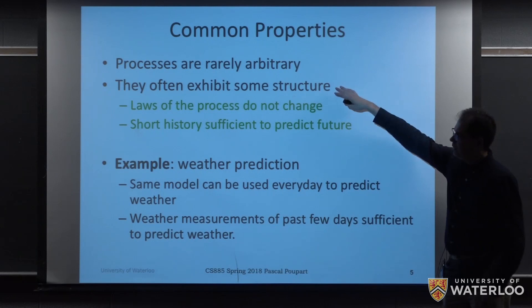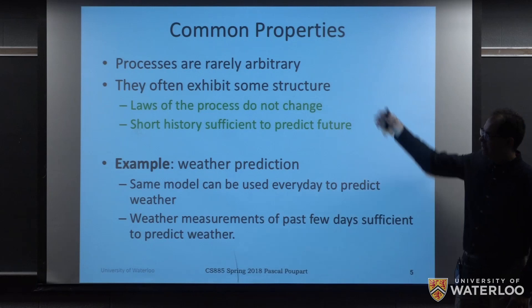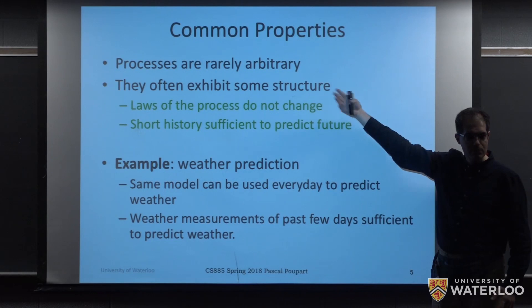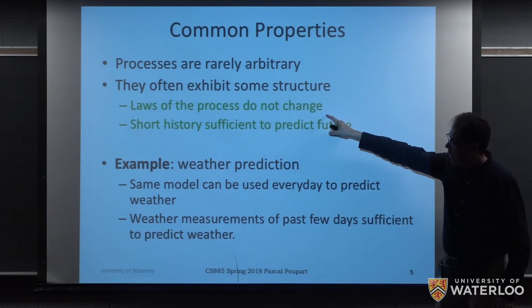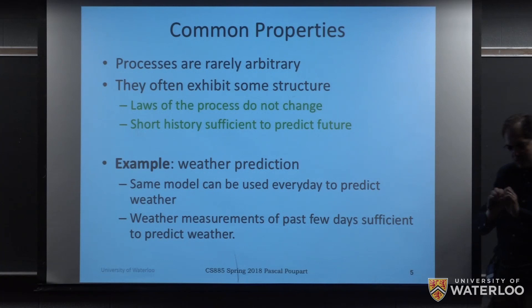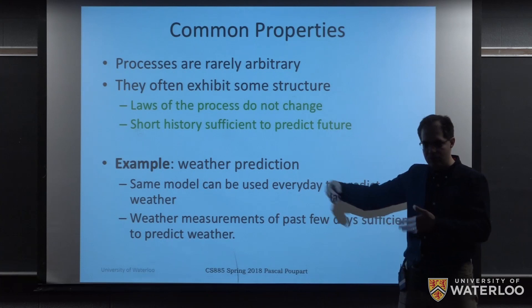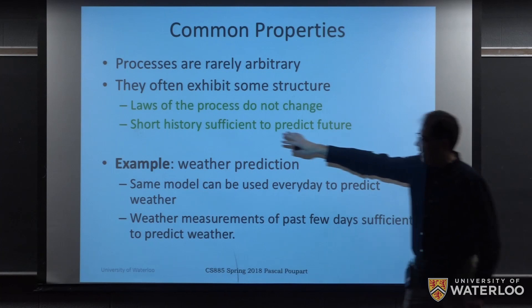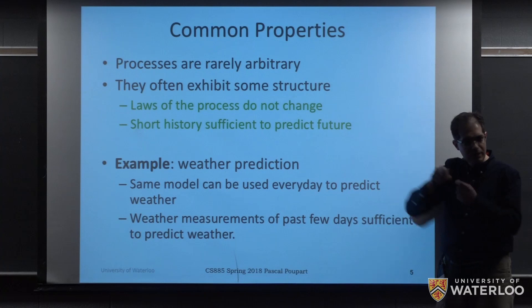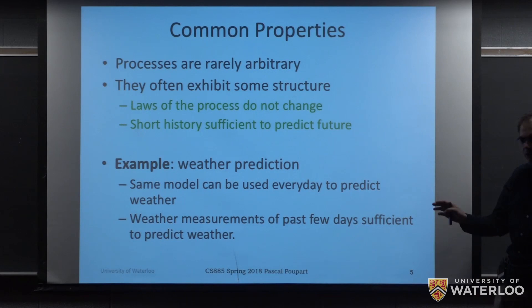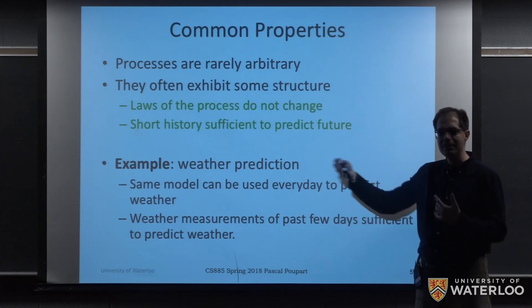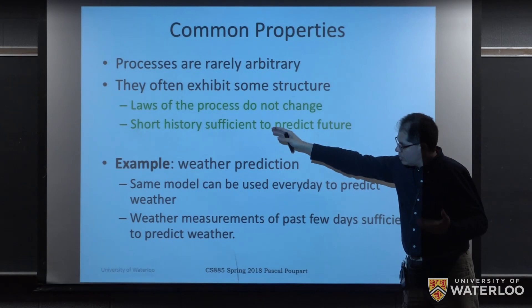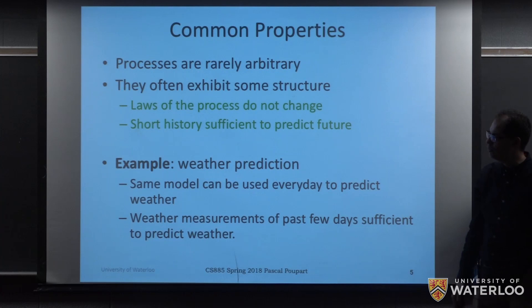There are lots of processes that we could use to model this. What tends to happen in practice is that most processes have some structure — they're not completely arbitrary. What I mean by this is that the laws of the process often do not change over time. The process is essentially the dynamics of how states, actions, and rewards would evolve. In many situations, the laws of the process do not change over time, and it's also the case that for many problems, there is a short history that is sufficient to predict what is going to happen next in the future — and here when I say predict, I don't mean necessarily in a deterministic fashion, it could be a probabilistic prediction.